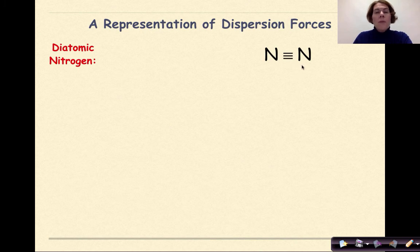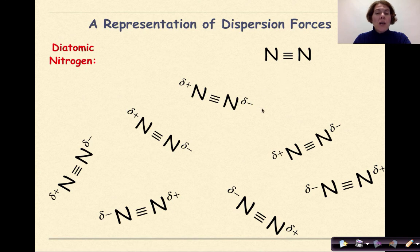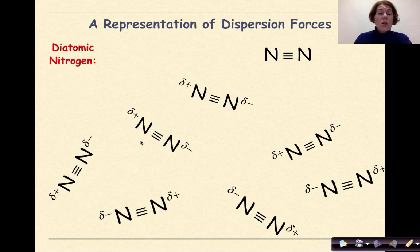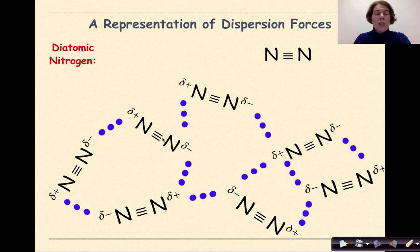Let's look at a representation of dispersion forces using diatomic nitrogen. No compound is static — electrons are always moving. At any point in time, the shared electrons might be more toward one nitrogen or pulsate toward the other. We can represent this movement as one nitrogen being slightly positive and the other slightly negative. When these nonpolar molecules are brought close to another molecule, we induce a dipole. With enough pressure and low enough temperatures, dispersion forces exist — shown as three blue dots between molecules — creating a very weak force of attraction that could make liquid nitrogen.